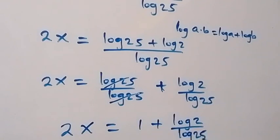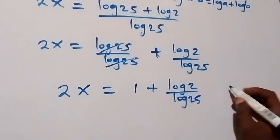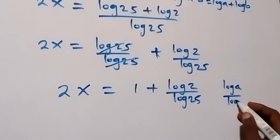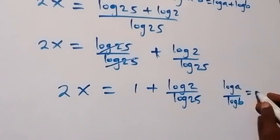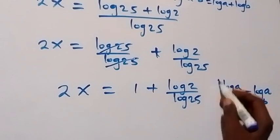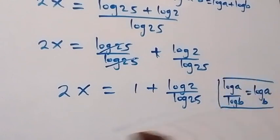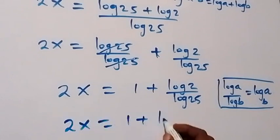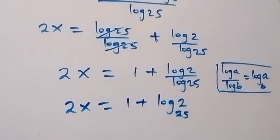Here we can apply change of base. We have log a over log b, so we can write this as log a base b. When we apply this, this becomes 2x equals 1 plus log 2 to base 25.